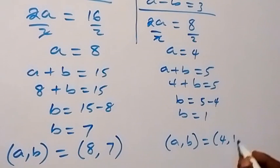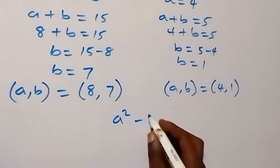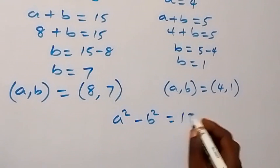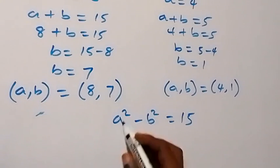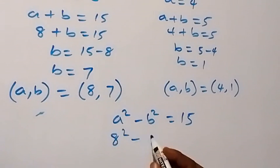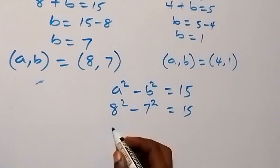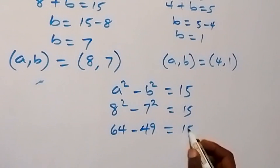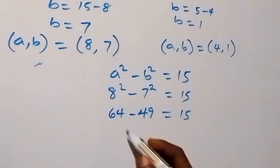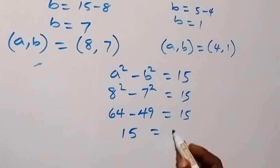From what is given, a squared minus b squared equals 15. Let's check with the first case if this satisfies the given problem. We have 8 squared minus 7 squared equals 15. That's 64 minus 49 equals 15, which is 15 equals 15. So the answer equals the right-hand side.